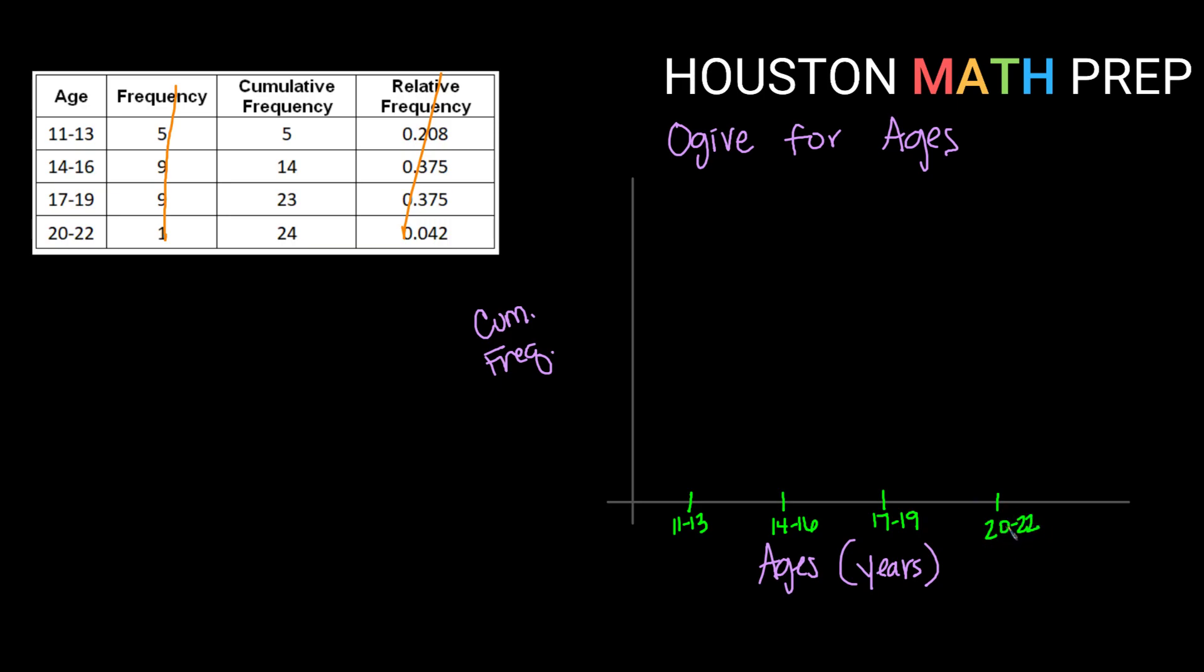Looking at what I need to be able to show with cumulative frequencies, I need to be able to get up to at least 24. So I'm going to go ahead and go up to 25 and count by fives. So there's 25, 20, 15, 10, and 5. All right, that should allow me to show everything I need.